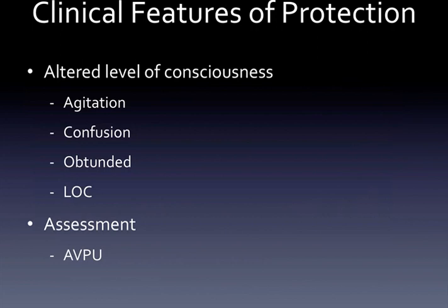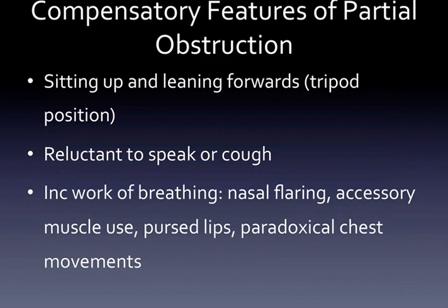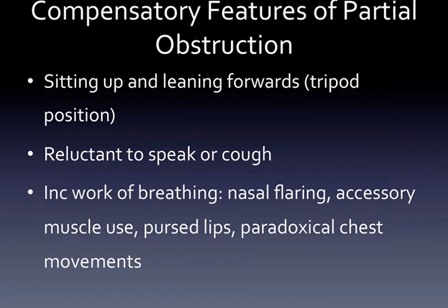Next in our assessment we look for features of protection. A patient mainly protects the airway via their level of consciousness and maintaining muscular tone. We look for altered levels of consciousness such as agitation, confusion, obtundation, and loss of consciousness. We can assess using the AVPU method or a direct GCS. We also look for compensatory features of partial obstruction such as the patient sitting up and leaning forwards in the tripod position, inability to speak or cough, and increasing work of breathing — nasal flaring, accessory muscle use, pursed lips, and paradoxical chest movements.